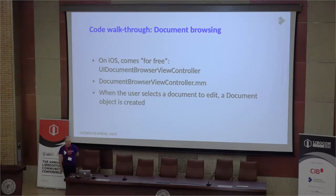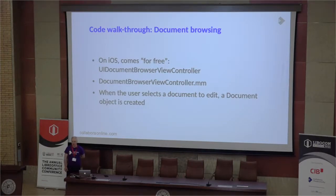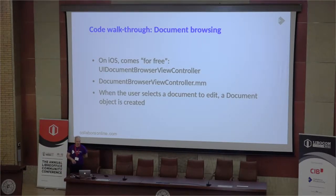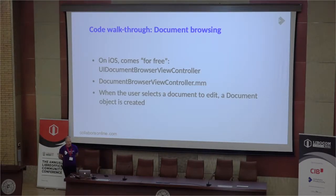When the app starts, it shows you first the document browser. At least on iOS, this was very trivial to do because you can use the system libraries to get this for free. You can browse local files or files on any so-called file storage extension or file storage provider. So if you have, for instance, installed Nextcloud on your iOS device, you can browse documents in Nextcloud — and the same for ownCloud — and also documents in iCloud Drive that are shared with your Macs and iOS devices.